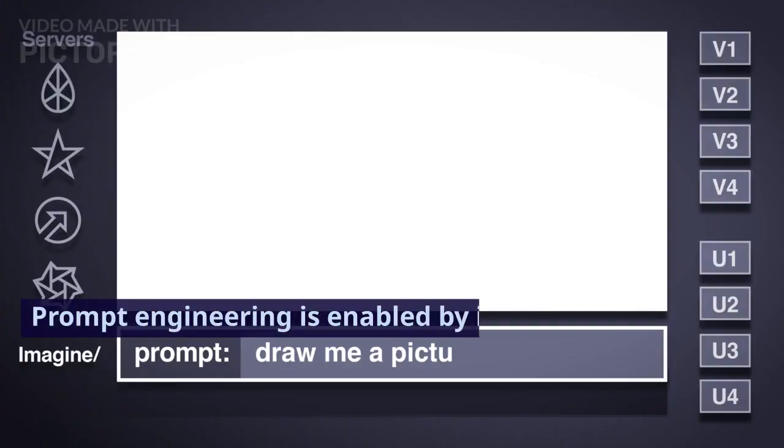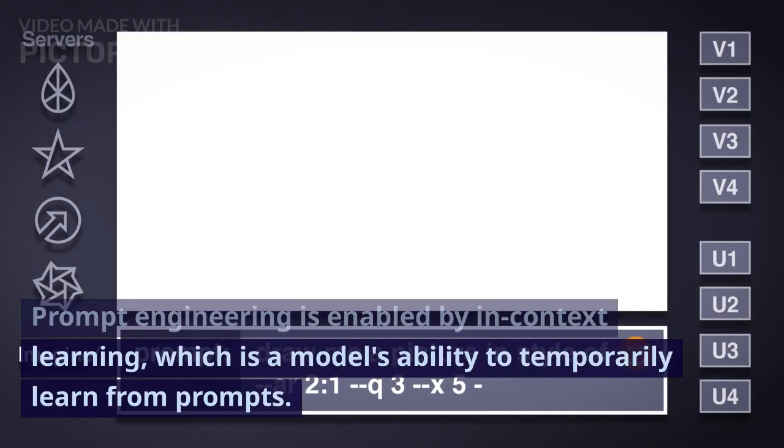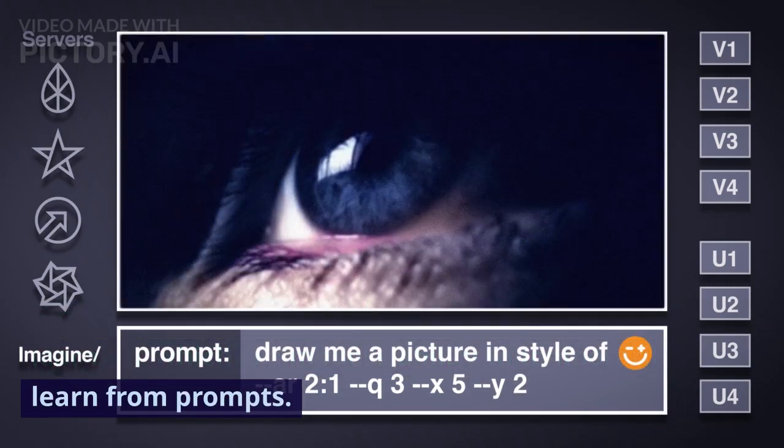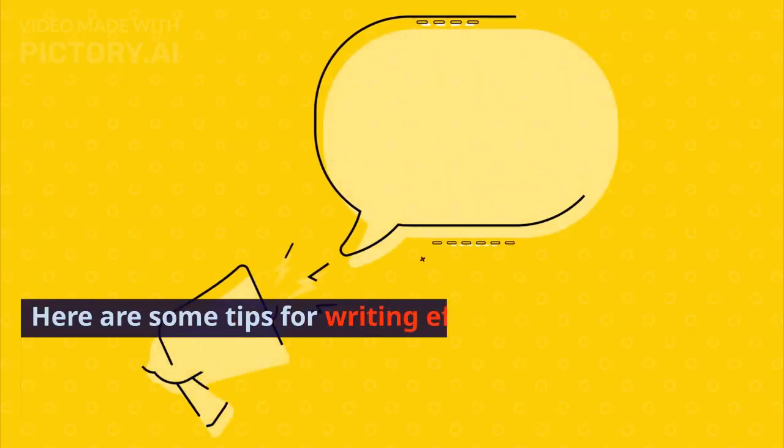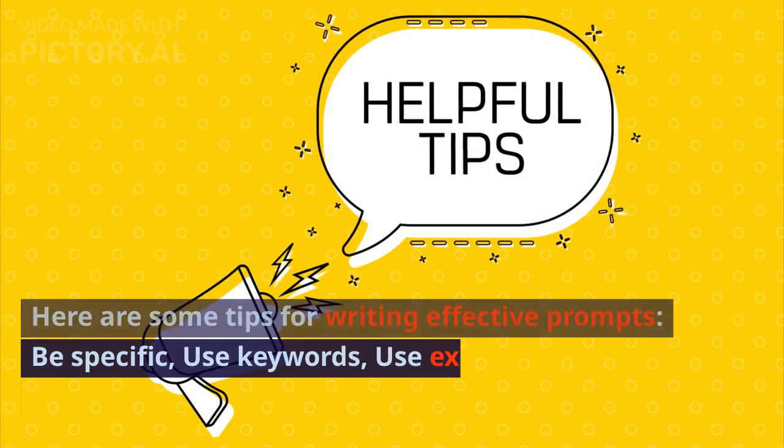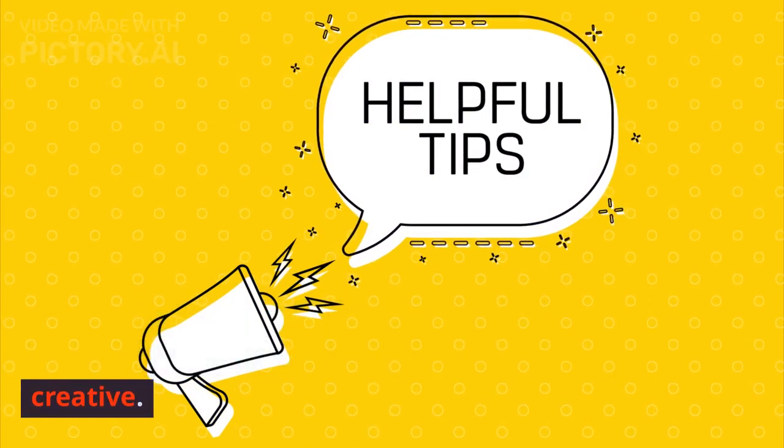Prompt engineering is enabled by in-context learning, which is a model's ability to temporarily learn from prompts. Here are some tips for writing effective prompts: Be specific, use keywords, use examples, be creative.